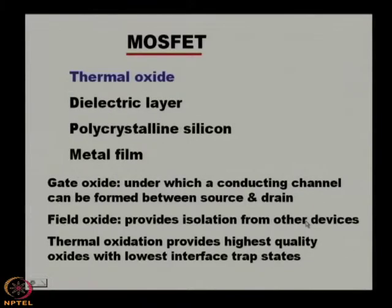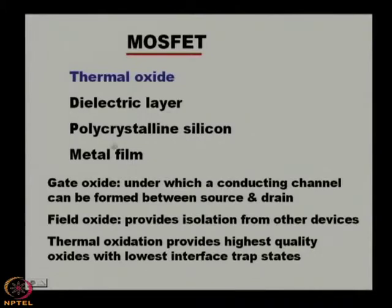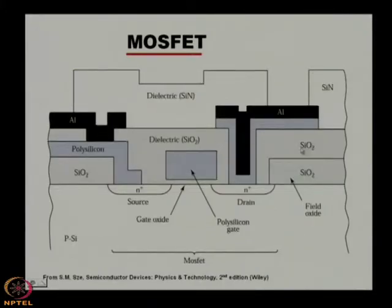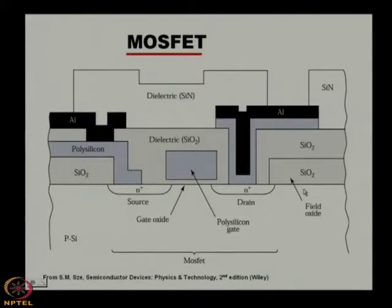If we subdivide the process technology related to MOSFET, there are four types of processing: thermal oxidation, dielectric layer, polycrystalline silicon, and metal film. The metal film is the aluminum (black region), the polysilicon gate is the bluish region, and there is also the gate oxide and the field oxide.